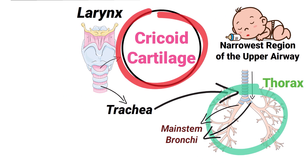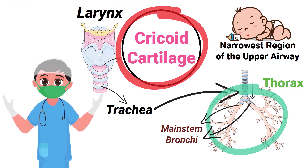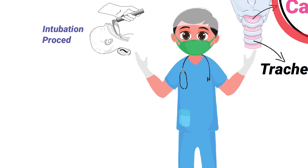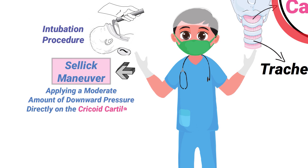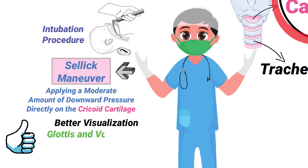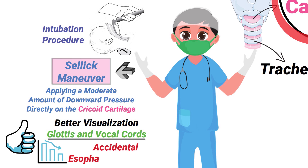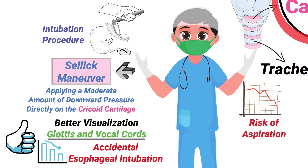The cricoid cartilage serves as an important anatomical landmark for respiratory therapists and medical professionals. This is especially true during an intubation procedure, because the physician may request that you perform the Sellick maneuver, which involves applying a moderate amount of downward pressure directly on the cricoid cartilage. This allows the physician to have better visualization of the glottis and vocal cords, which decreases the likelihood of accidental esophageal intubation and also minimizes the risk of aspiration.